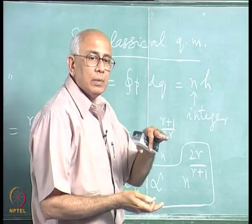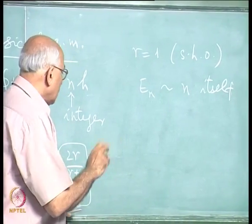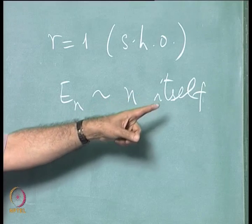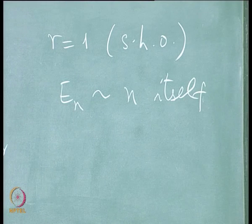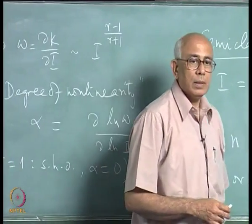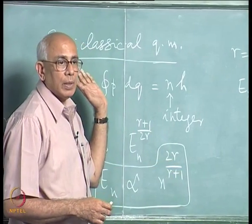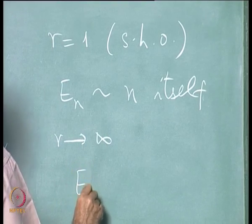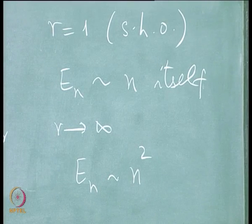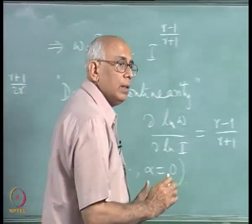That is equally spaced energy levels, which is exactly what the harmonic oscillator gives in quantum mechanics. The exact relation is E_n equals (n + 1/2) times h-bar omega, where the one-half arises from zero-point motion representing the ground state energy. As r tends to infinity, E_n goes like n squared, which is precisely the level spacing for a particle in a box — a potential that rises infinitely steeply.